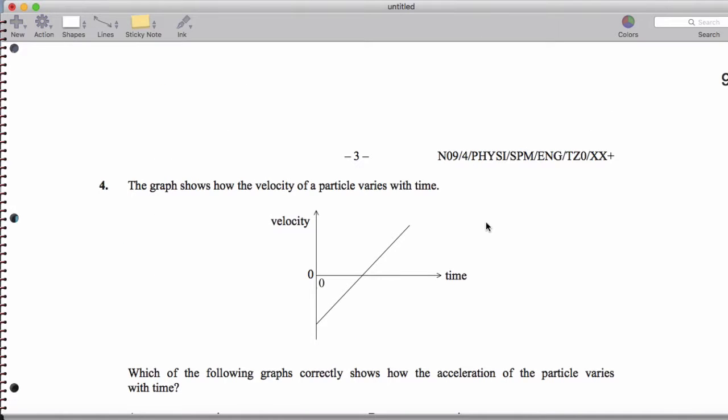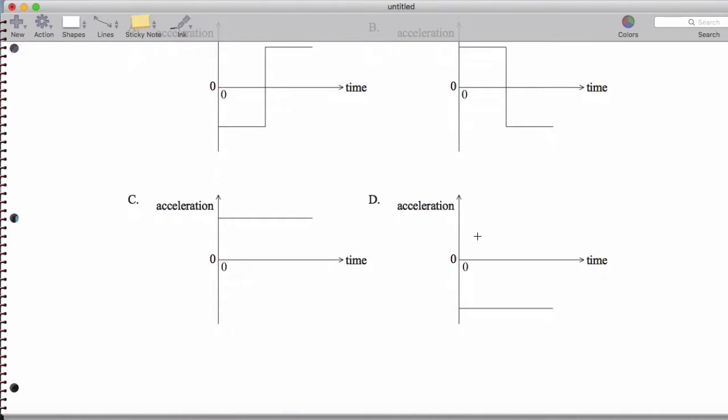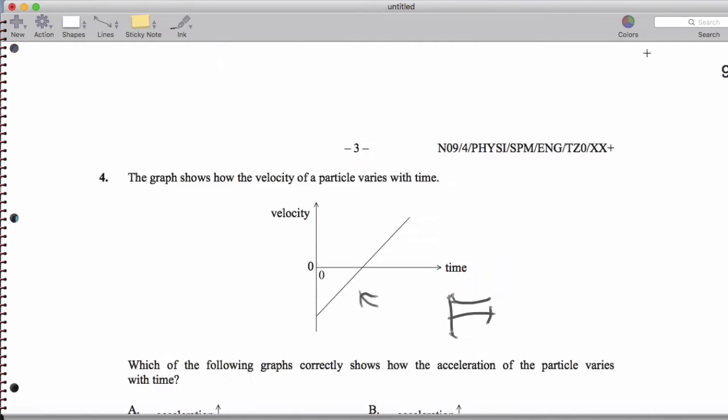And then for number three, the acceleration of the particle versus time. Acceleration is the slope. So the acceleration graph should just be a nice steady flat line like this. All right.